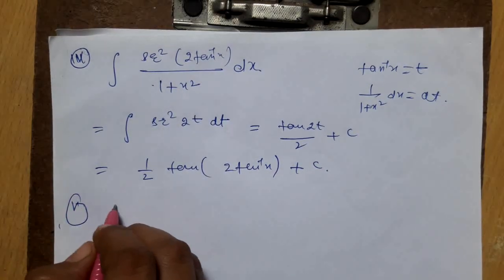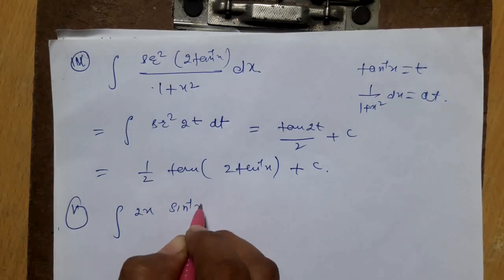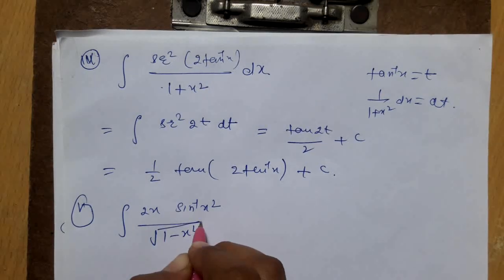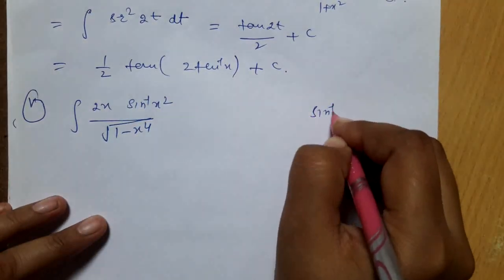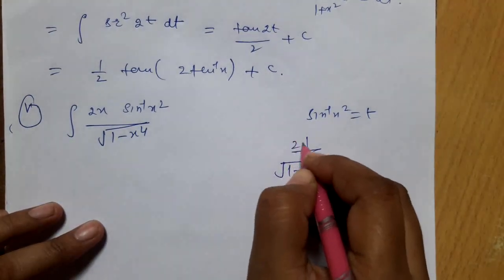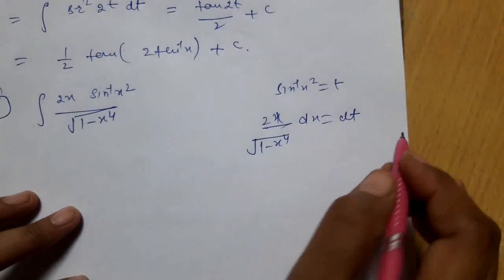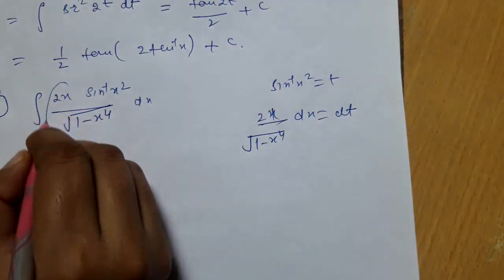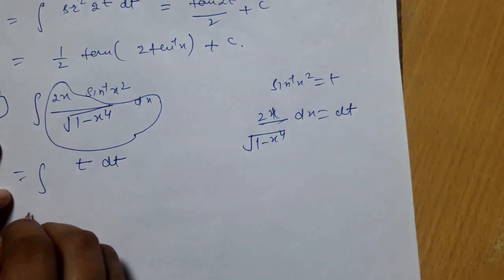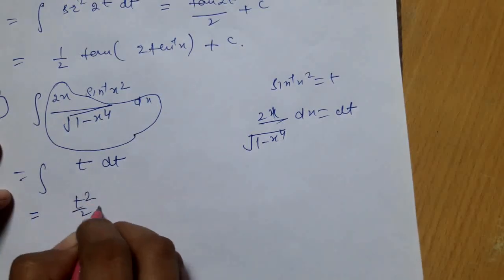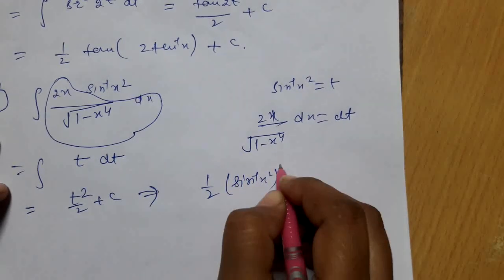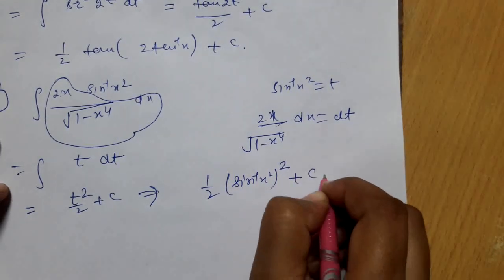Part 5: integration of 2x · sin⁻¹(x²) / √(1 − x⁴) dx. Put sin⁻¹(x²) = t, so 2x/√(1 − x⁴) dx = dt. The integral becomes ∫t dt = t²/2 + c. The answer is (1/2)(sin⁻¹(x²))² + c.